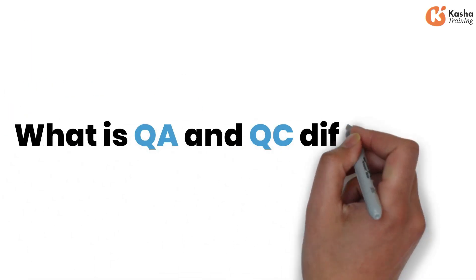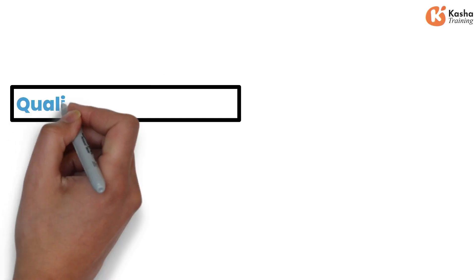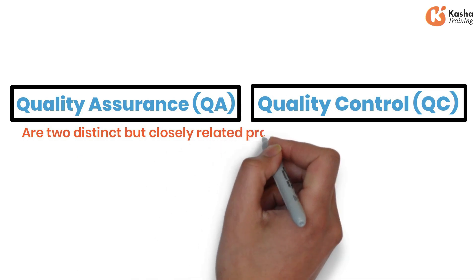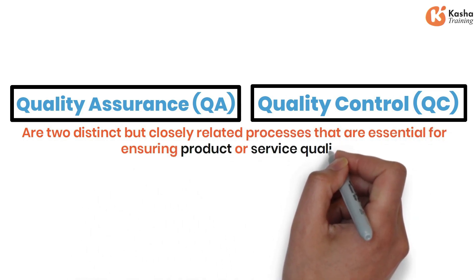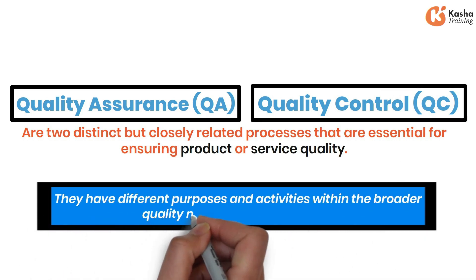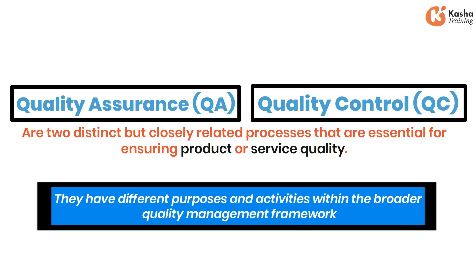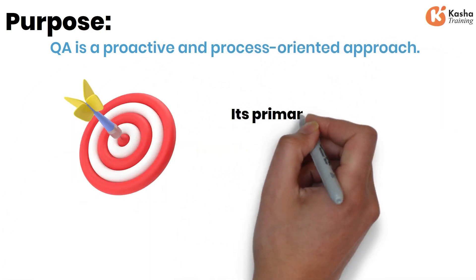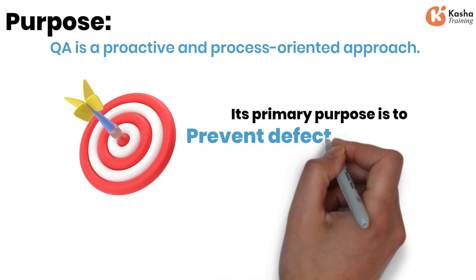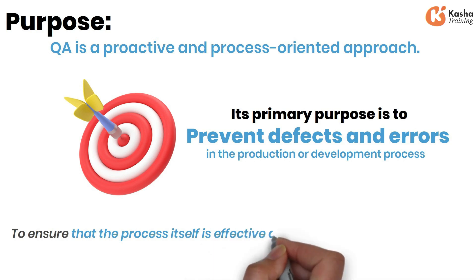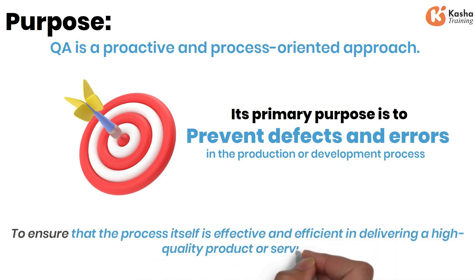What is the difference between QA and QC? Quality Assurance, QA, and Quality Control, QC, are two distinct but closely related processes that are essential for ensuring product or service quality. They have different purposes and activities within the broader quality management framework. Quality Assurance, QA — Purpose: QA is a proactive and process-oriented approach. Its primary purpose is to prevent defects and errors in the production or development process and to ensure that the process itself is effective and efficient in delivering a high-quality product or service.